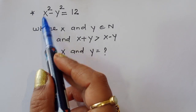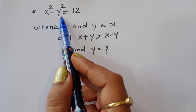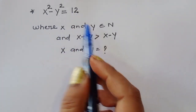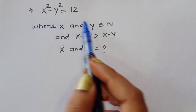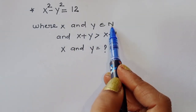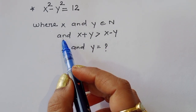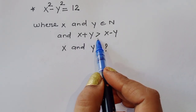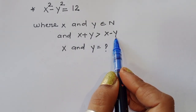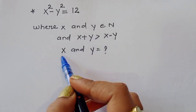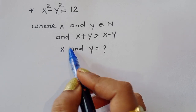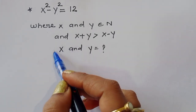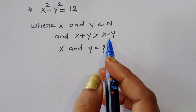The question is: given x² - y² = 12, where x and y belong to the natural numbers, and another condition is x + y is greater than x - y. We have to find out the value of x and y. Let's see the solution — how we can find out the value of x and y.